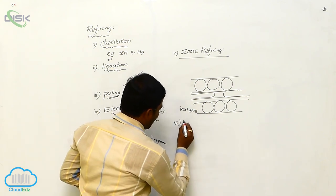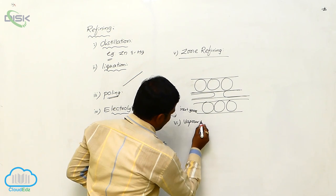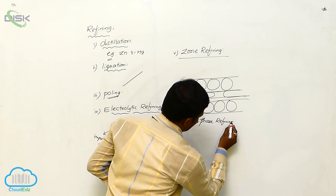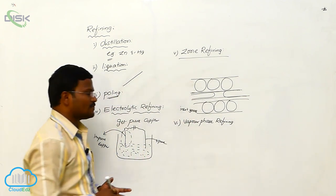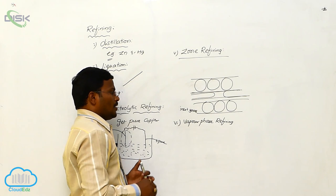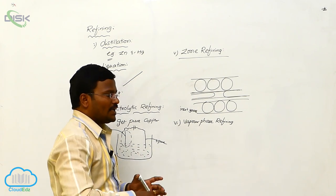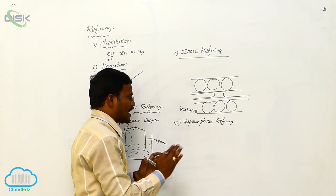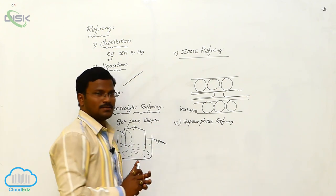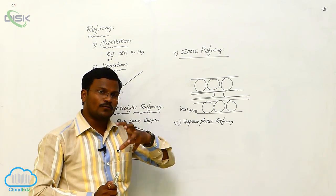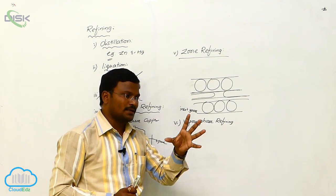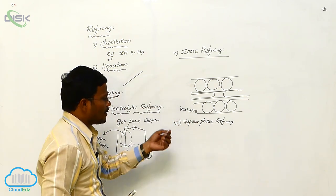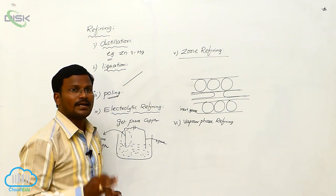The last method is vapour phase refining. In vapour phase refining, the metals with their impurities are heated in a specified equipment under special circumstances. During this process, vapours are collected — the pure vapours of metals are collected, then converted into liquids followed by solids. This type of purification is called vapour phase refining.